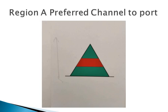The pistachio ice cream indicates Region A with red preferred channel to port. So this is Region A preferred channel to port: color green with one broad red horizontal band, top mark nil, light green, rhythm composite group flashing 2+1.